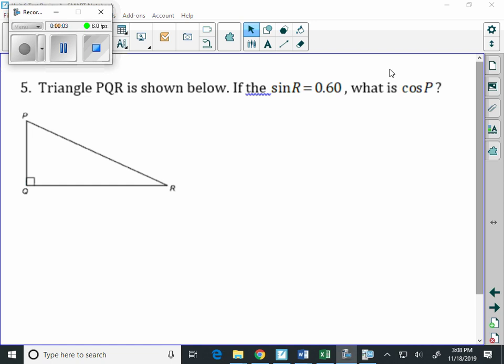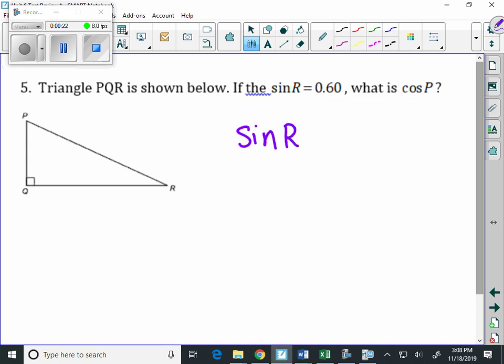Triangle PQR is shown below. If the sine of R is 0.60, what is the cosine of P? Well, using the complementary theorem, if we know the sine of R is 0.60, the sine of R is equivalent to the cosine of P, so that means cosine of P is 0.60.